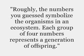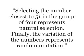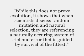Roughly, the numbers you guessed symbolize the organisms in an ecosystem. Each group of 4 numbers represents a generation of offspring. Selecting the number closest to 51 in the group of 4 represents natural selection. Finally, the variation of the numbers represents random mutation. While this does not prove evolution, it shows that when scientists discuss random mutation and natural selection, they are referencing a naturally occurring system of trial and error that is guided by survival of the fittest.